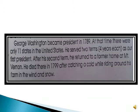Now come to the last paragraph. George Washington became president in 1789. At that time there were only 11 states in the United States. He served two terms as the first president. After his second term he returned to his former home at Mt. Vernon. He died there in 1799 after catching a cold while riding around his farm in wind and snow.